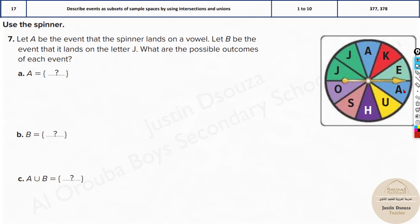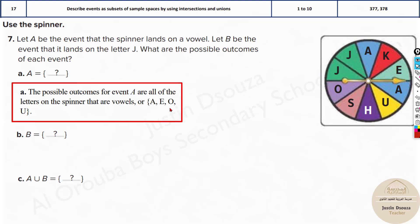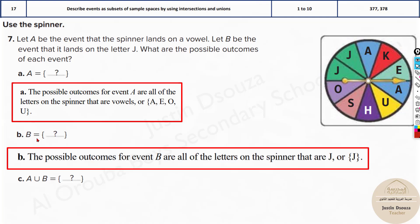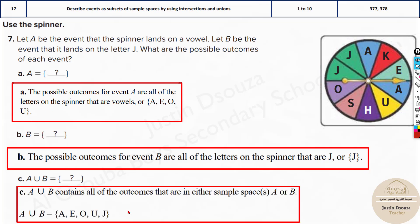So here, vowels are A, E, A. But A is repeated twice. So no need of writing. A, E, U, O. Those are the vowels. A, E, O, U. And over here, we have only J. Now we have to find the union. So we need to write them all up together. A, E, O, U, J. That's the answers.